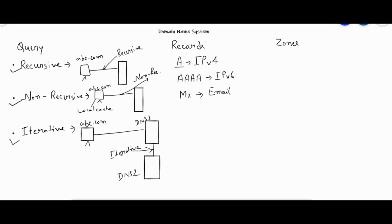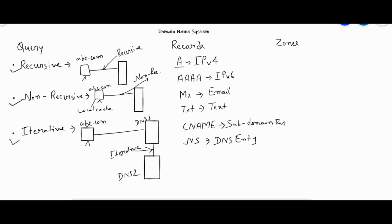We also have the TXT record, which maintains text records. Next is the very popular CNAME record, which maintains subdomain forwarding records. We also have the NS record, which maintains DNS entry records. Finally, the SOA or certificate record keeps records of certificates.